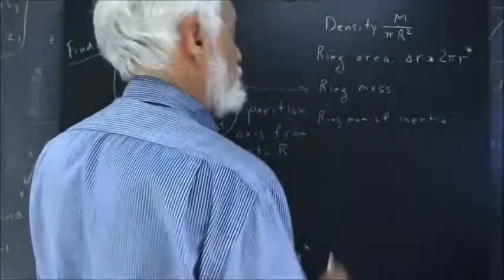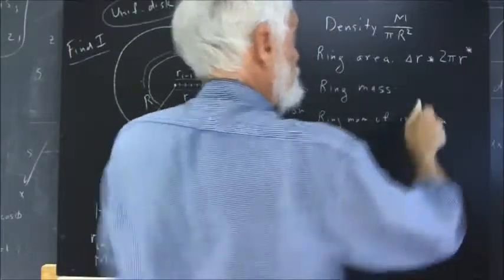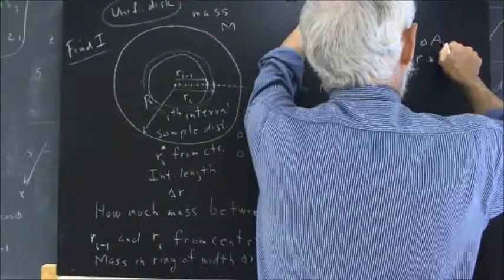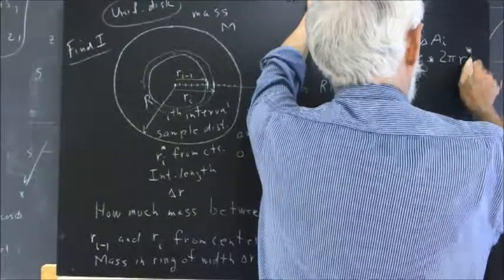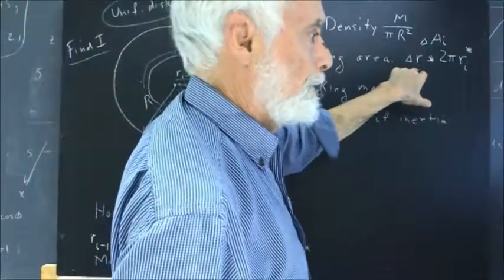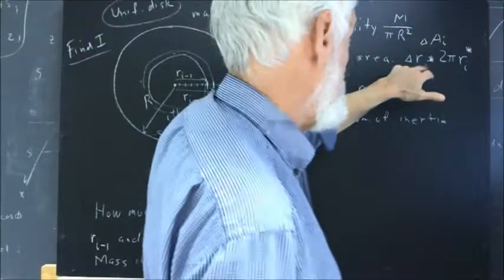Okay, so we could call that the area increment. We could call that delta A sub i, where we have an R i star. We'll assume uniform delta R's. It's not necessary to do that, but we'll assume uniform delta R's so we don't have to write i's on them.